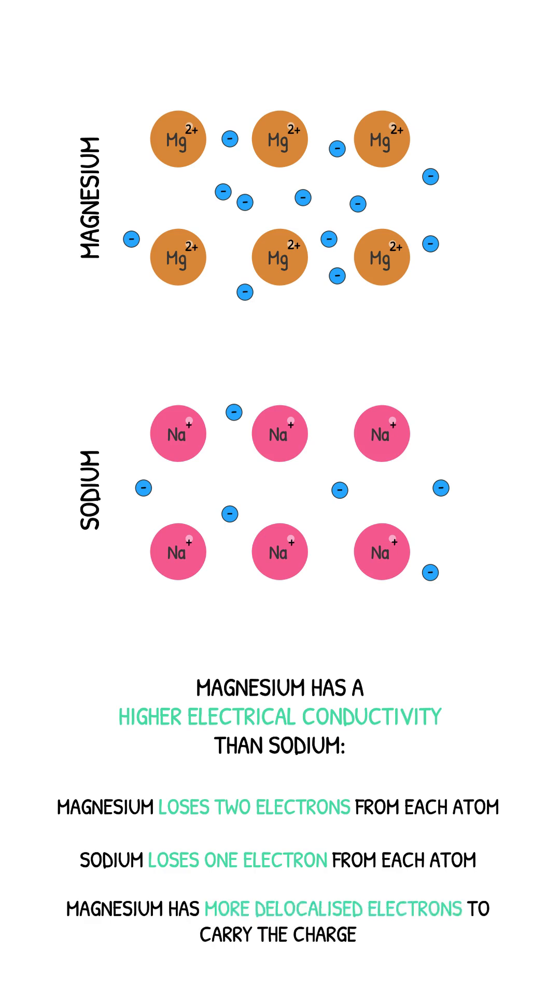Magnesium has more delocalised electrons within its structure, meaning there are more particles to carry the electrical charge, therefore increasing its electrical conductivity.